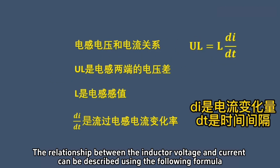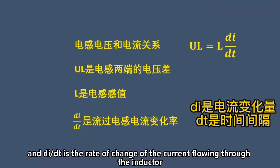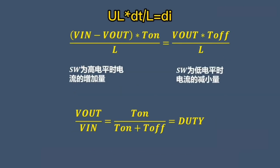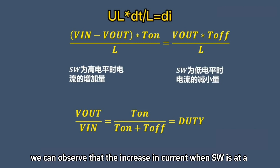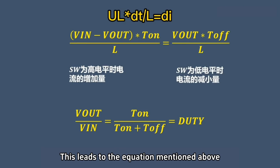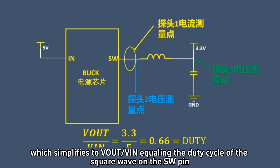The relationship between the inductor voltage and current can be described using the formula: UL is the voltage difference across the inductor, L is the inductance value, and dI/dt is the rate of change of the current flowing through the inductor. We can observe that the increase in current when SW is at a high level is equal to the decrease in current when SW is at a low level. This leads to the equation which simplifies to VOUT / VIN equaling the duty cycle of the square wave on the SW pin.